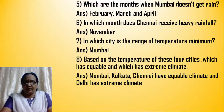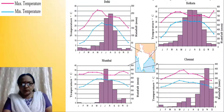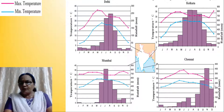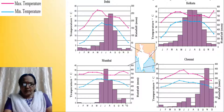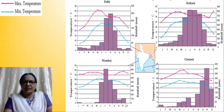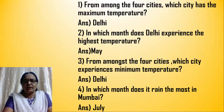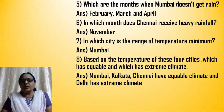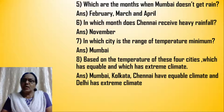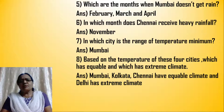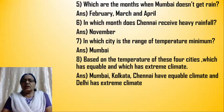In which month does Chennai receive heavy rainfall? Chennai receives heavy rainfall in the month of November. Looking at Mumbai, there is only very slight rain in November. The previous question needs a correction — Mumbai does get a slight rainfall in December due to cyclonic storms and the northeast retreating monsoon winds, which also give rainfall to Chennai in the winter season. So the months where Mumbai doesn't get rain are February, March, and April.